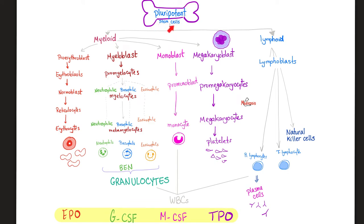Which one is hematopoietic? The red bone marrow. Hematopoiesis includes making red blood cells, white blood cells, and platelets. We talked about all of this in my hematology playlist. If I have few red blood cells, we call this anemia; too many, polycythemia. If I have few platelets, thrombocytopenia; too many, thrombocytosis or thrombocytemia. If I have many white blood cells, leukocytosis; few, leukopenia.